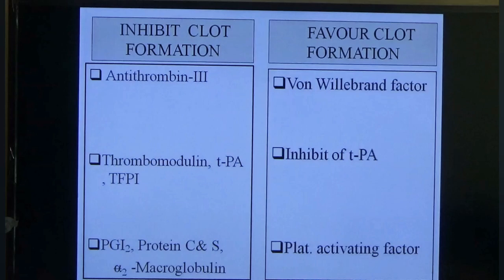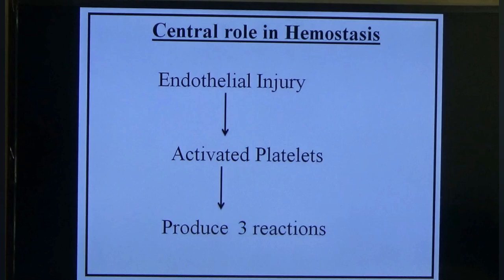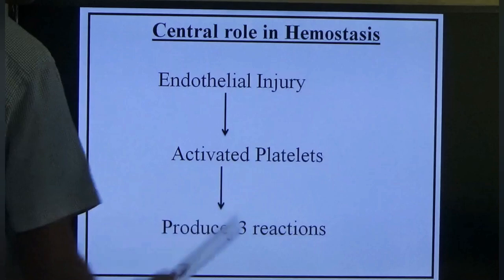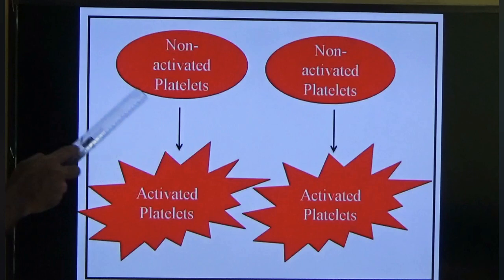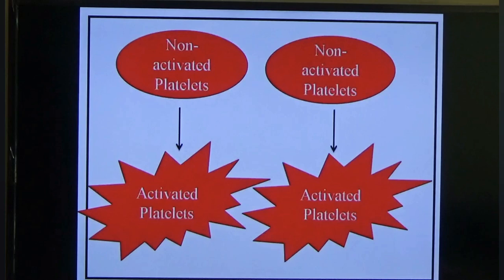Platelets play a central role in hemostasis. When endothelial injury occurs, platelets are immediately activated. Non-activated platelets have a biconvex (lens) shape. Once activated, they develop pseudopods. This activated platelet produces three types of reactions: platelet adhesion, platelet secretion, and platelet aggregation.